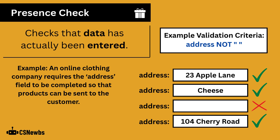A presence check checks that data has actually been entered, and a text box has not been left blank. In this example, it is very obvious to see that there's only one data field which has broken the presence check, which is the third one, because nothing has been written.